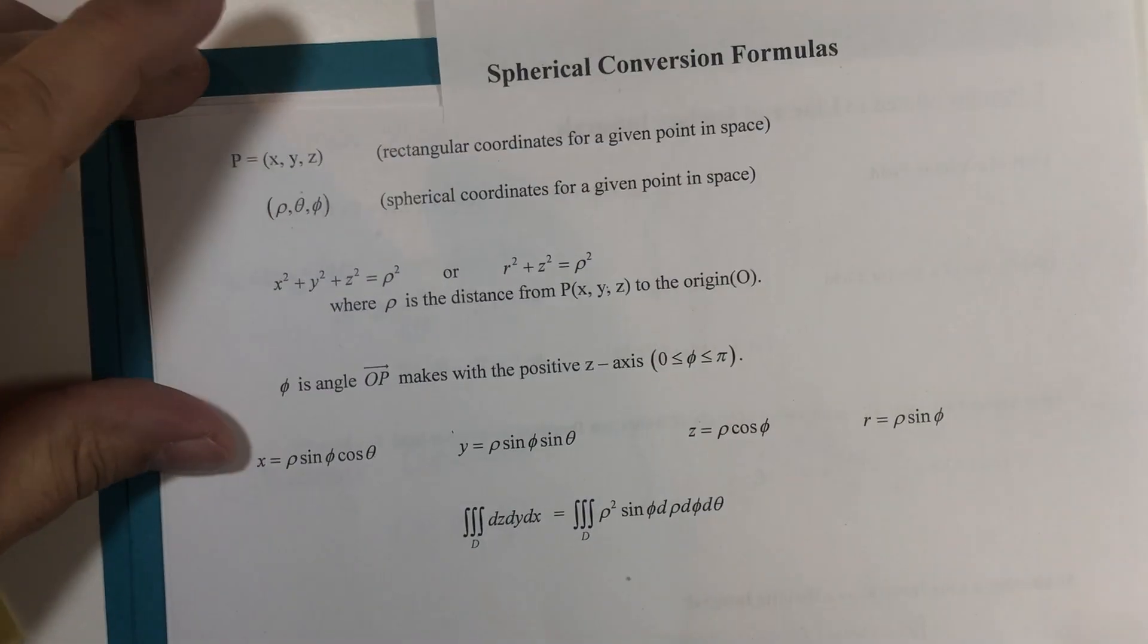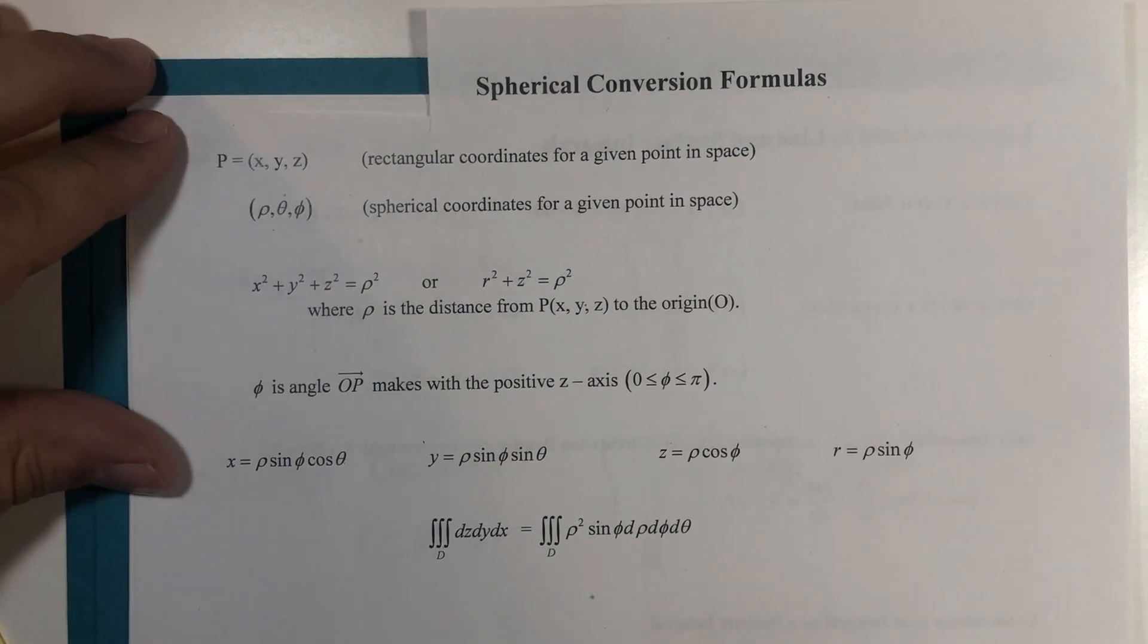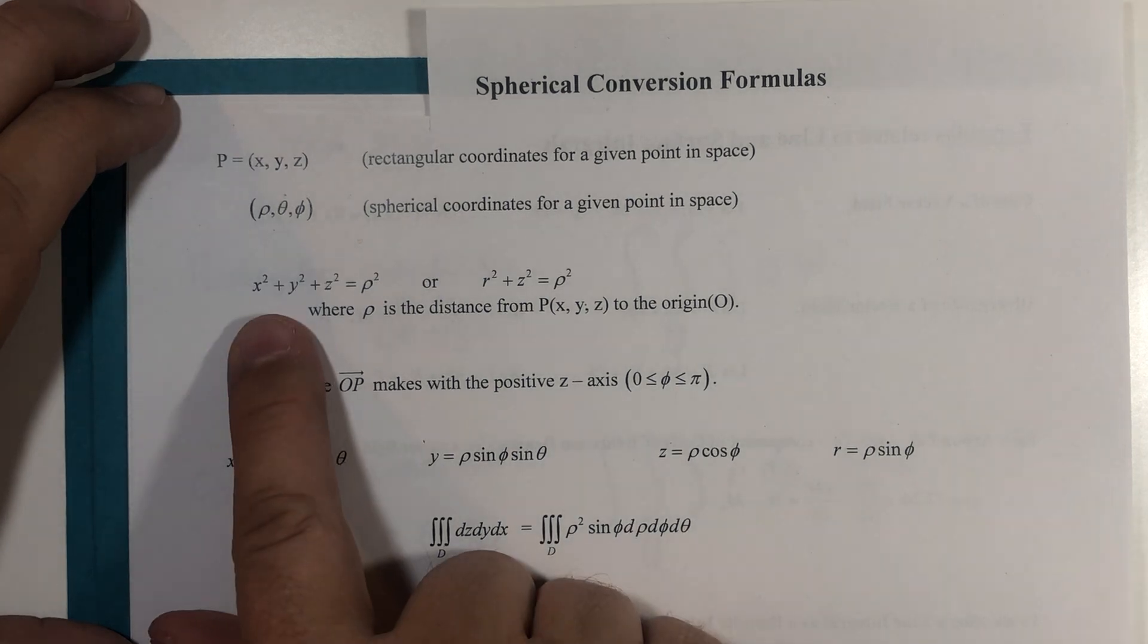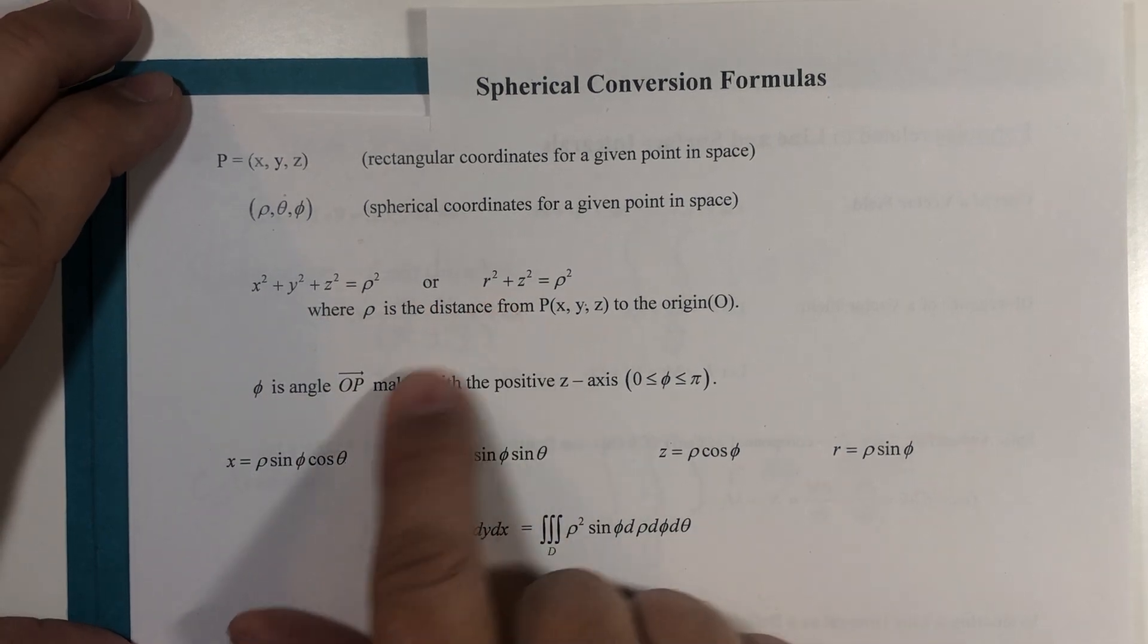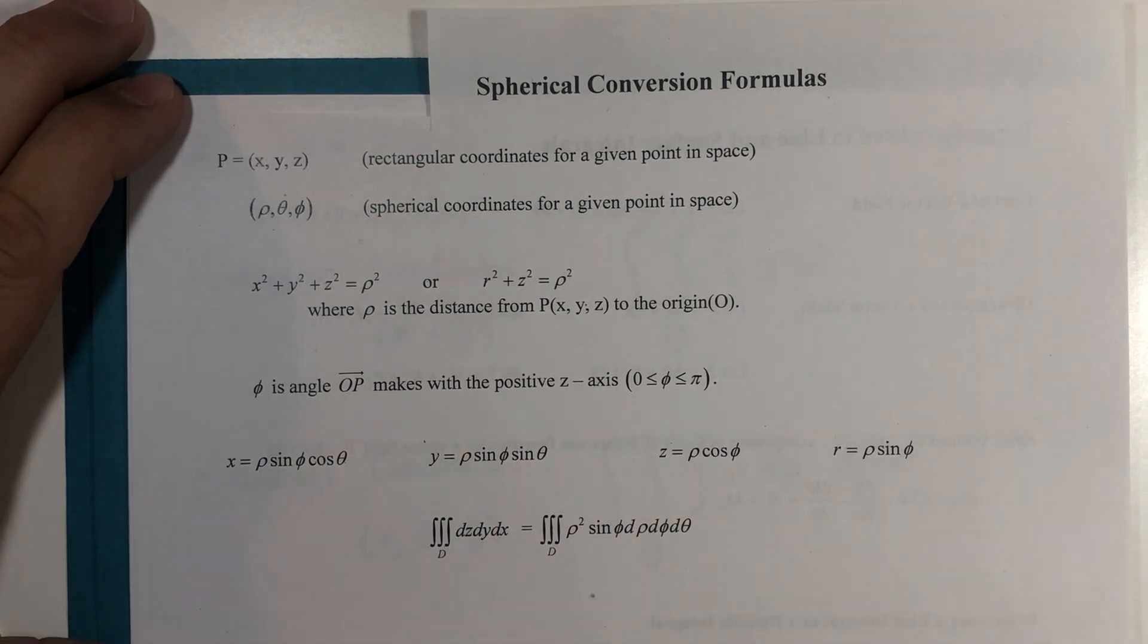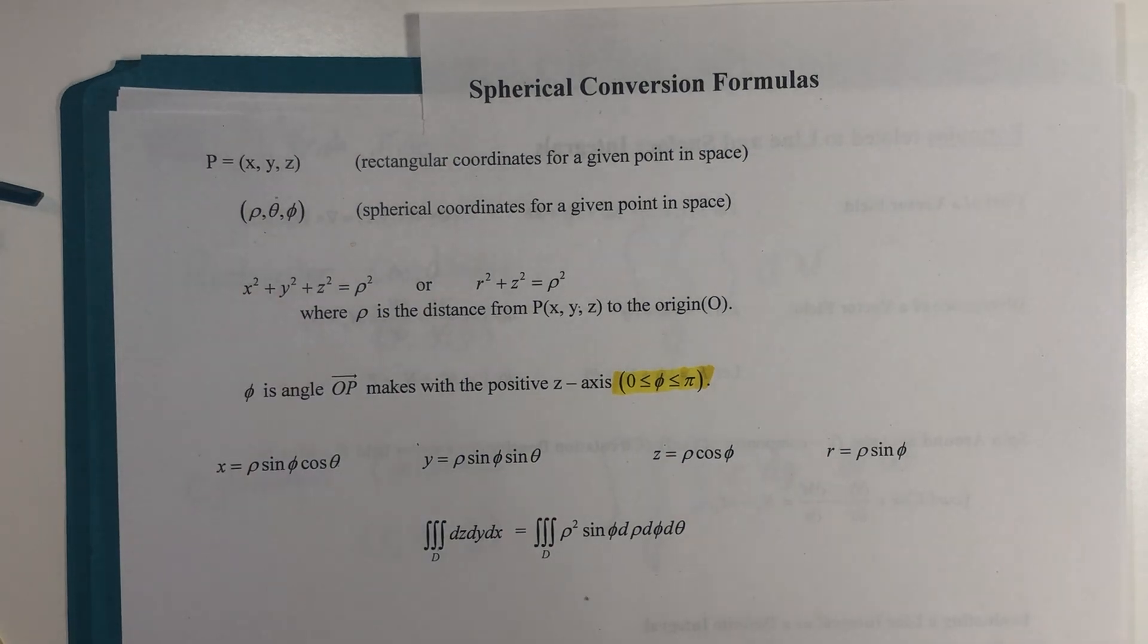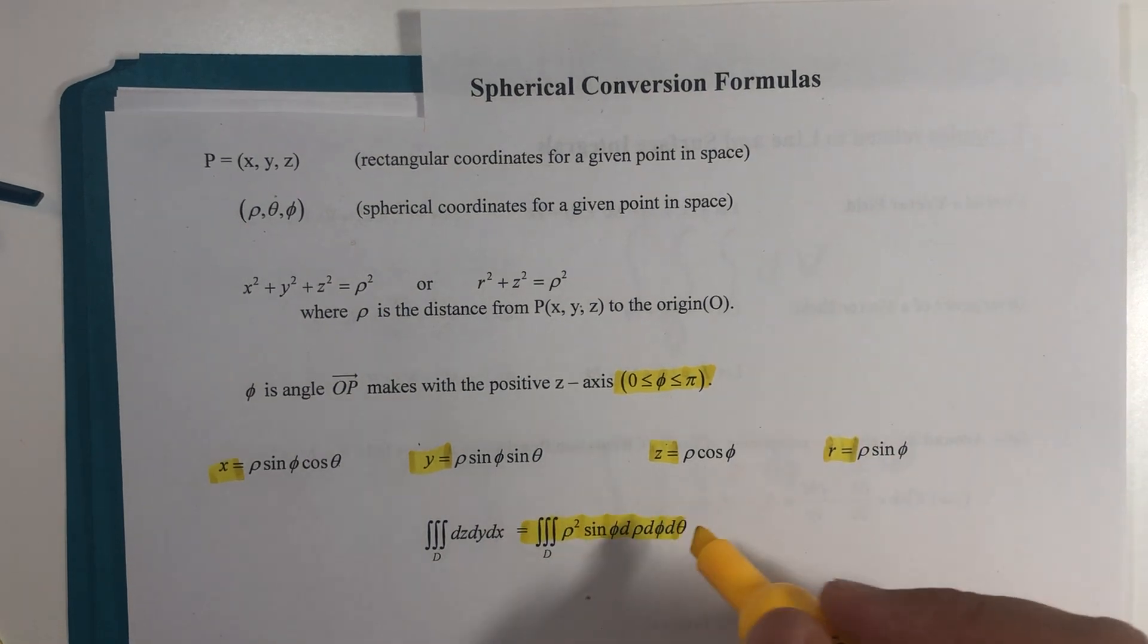We had some conversion formulas for spherical coordinates. This isn't going to stay on the screen very long. Most textbooks are going to have this information directly in there, or a quick search will find them. The x squared plus y squared plus z squared is the radius squared, but x squared plus y squared is r squared, so there's a different way of writing it. Phi from the positive z-axis is limited from zero to pi, and then we have a variety of conversion formulas for x, y, z, and even r, and finally our triple integration here.